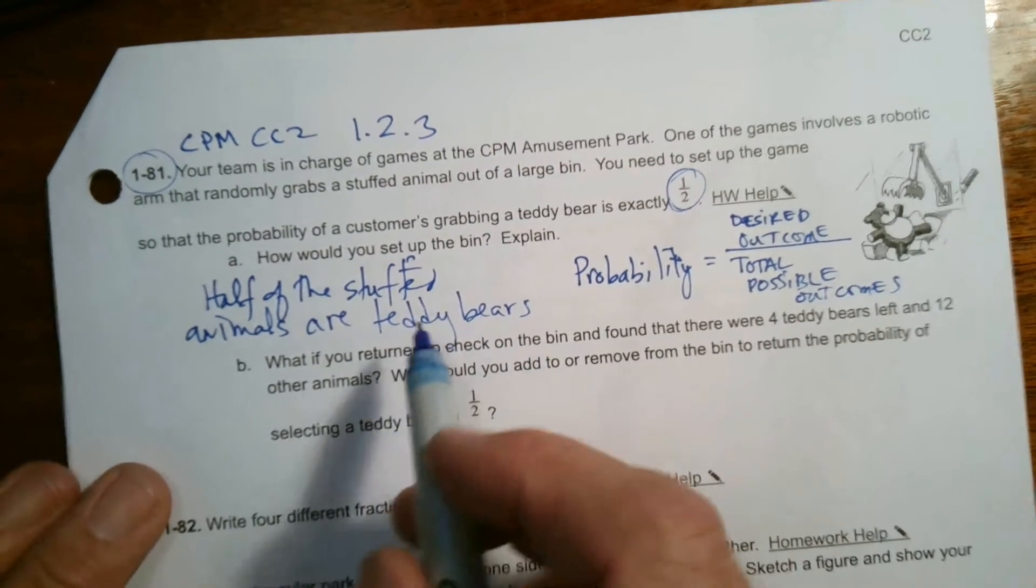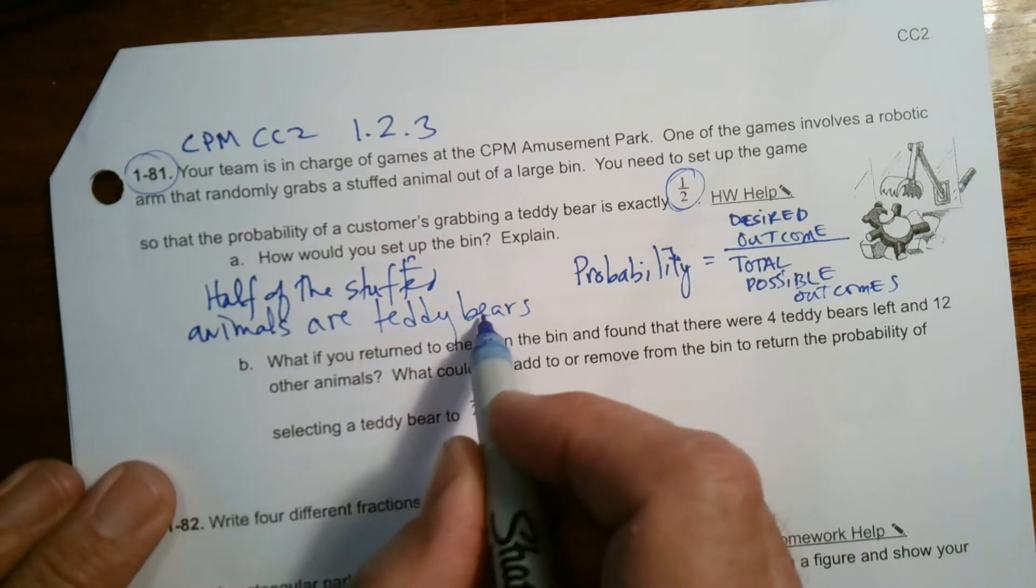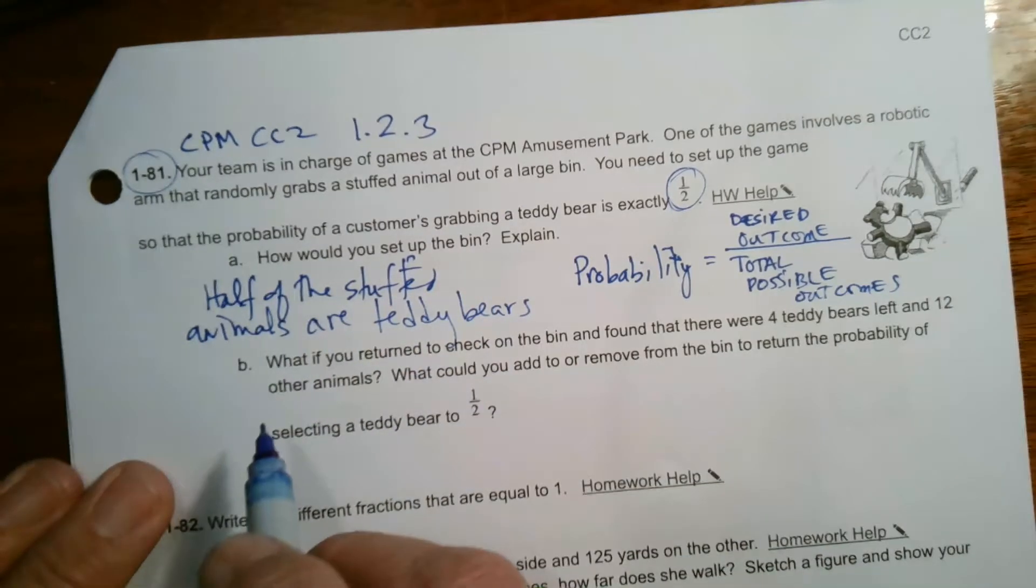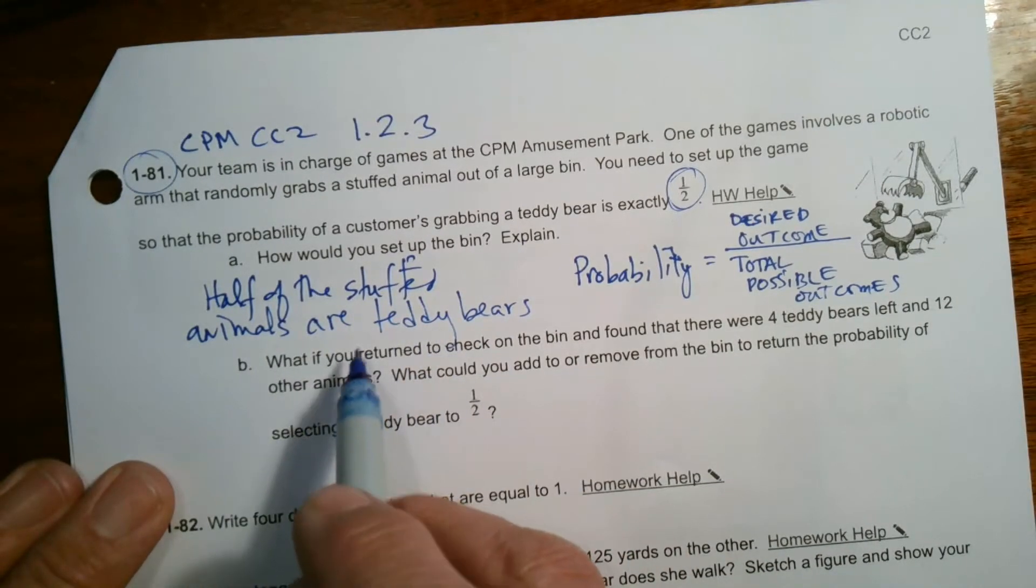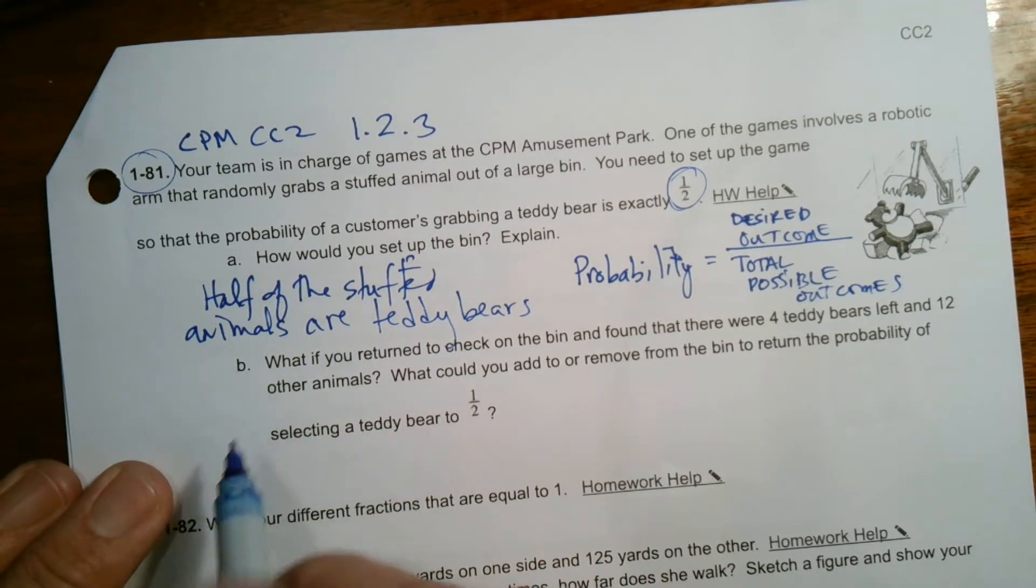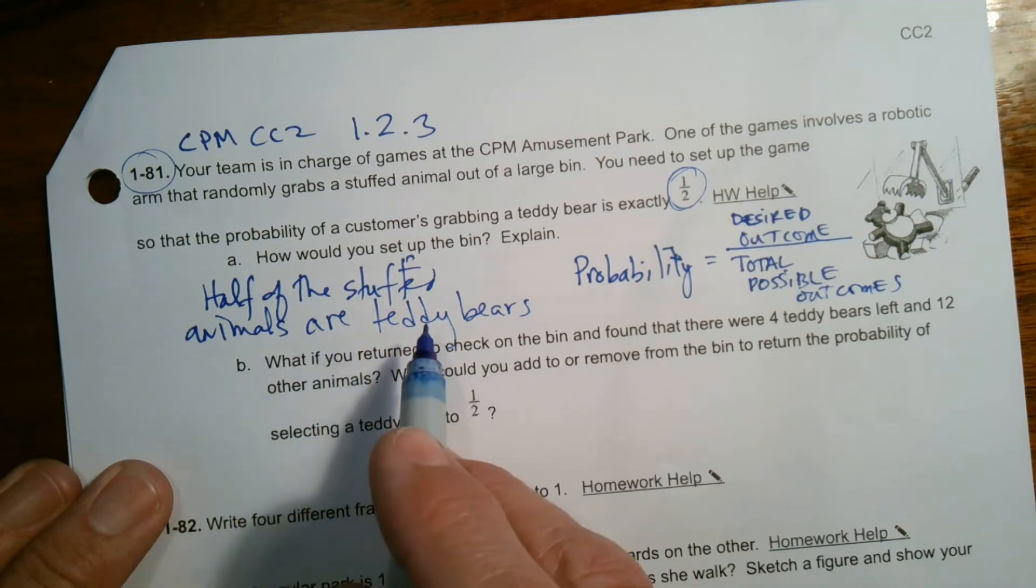Because say there were six teddy bears, then we'd want to make sure there's 12 total animals. So six teddy bears and six others would be what we'd have. Or you could say an equal amount of teddy bears with an equal amount of other stuffed animals.